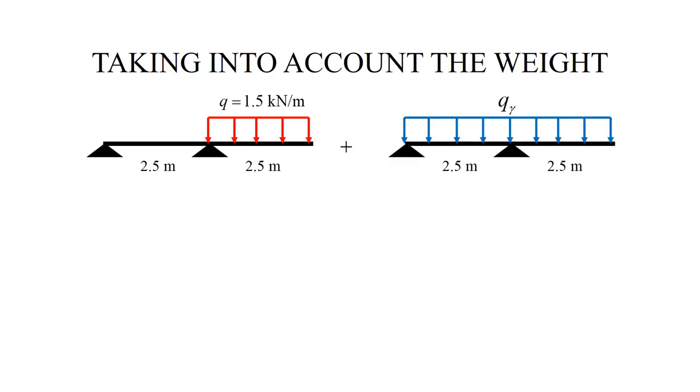So to take into account the weight, we take the original beam and we add to it a uniformly loaded beam. The distributed load we denote by Q gamma, where gamma refers to the specific weight.